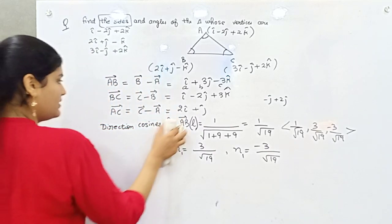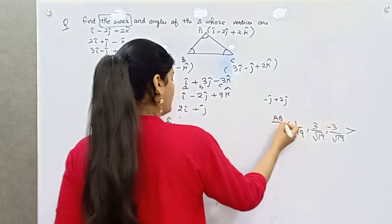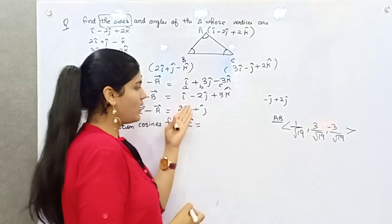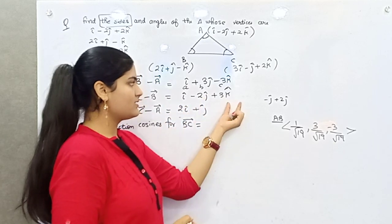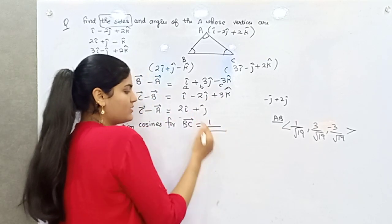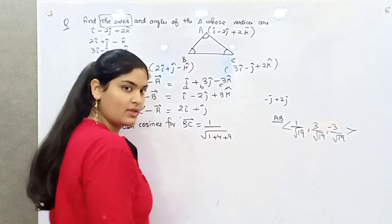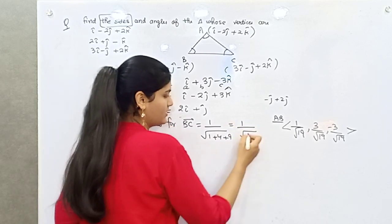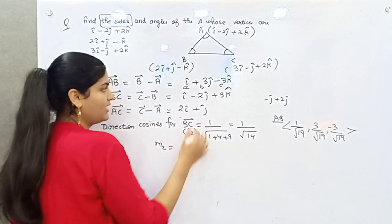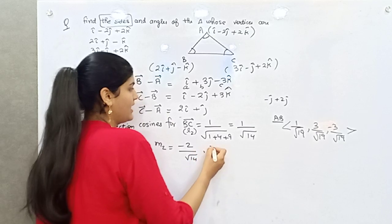Now for BC, the components are A = 1, B = −2, C = 3. The magnitude is √(1² + (−2)² + 3²) = √(1 + 4 + 9) = √14. So L2 = 1/√14.